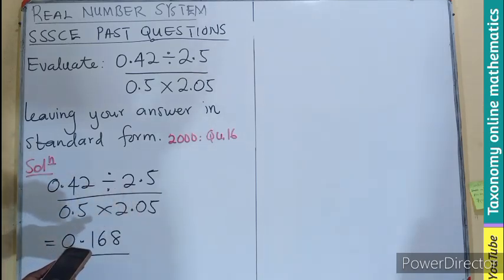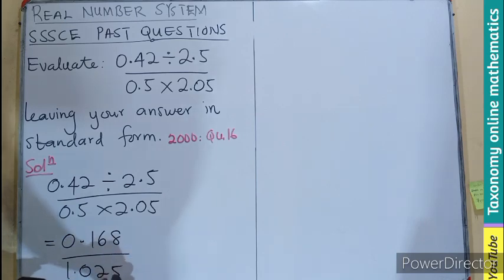Then we multiply the denominator as well. 0.5 times 2.05. That will be 1.025.